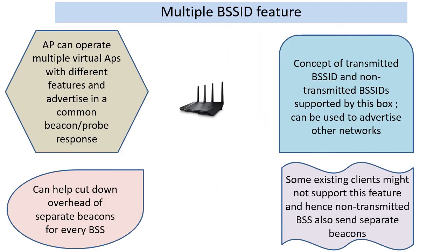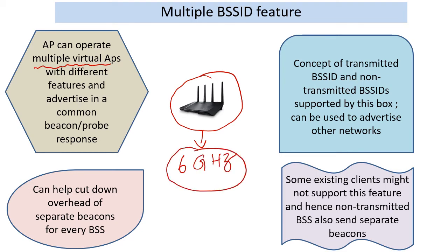The next feature, Multiple BSS ID, was originally intended to cut down beacons and to a certain extent probe responses sent as part of a multiple virtual AP implementation. It can also carry information about 6 gigahertz networks present in a certain box. Here again we limit scanning to 2.4 or 5 and very little scanning in 6 gigahertz, and using the Multiple BSS ID feature we can convey a lot of other BSSes supported by the same box. IEEE and WFA have been trying to get people to implement this, but with legacy clients in 2.4 and 5 gigahertz it has been a challenge.